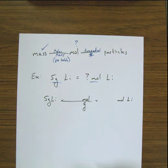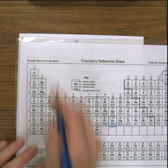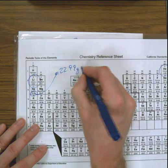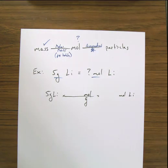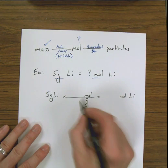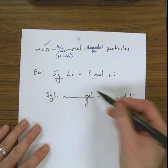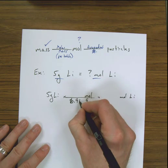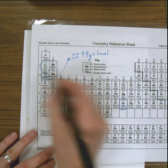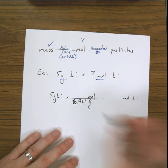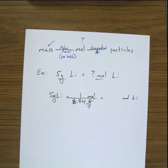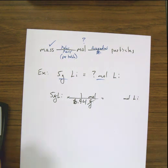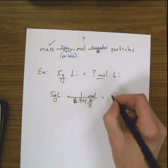I look up lithium in the periodic table — lithium is 6.94, meaning 6.94 grams equals 1 mole. That's the molar mass. The mass number from the periodic table always goes where the grams are — sometimes on top, sometimes on bottom, but it always comes from the periodic table. So lithium is 6.94 grams per 1 mole; the grams cancel out, and I calculate 5 divided by 6.94, which gives me 0.7 moles.